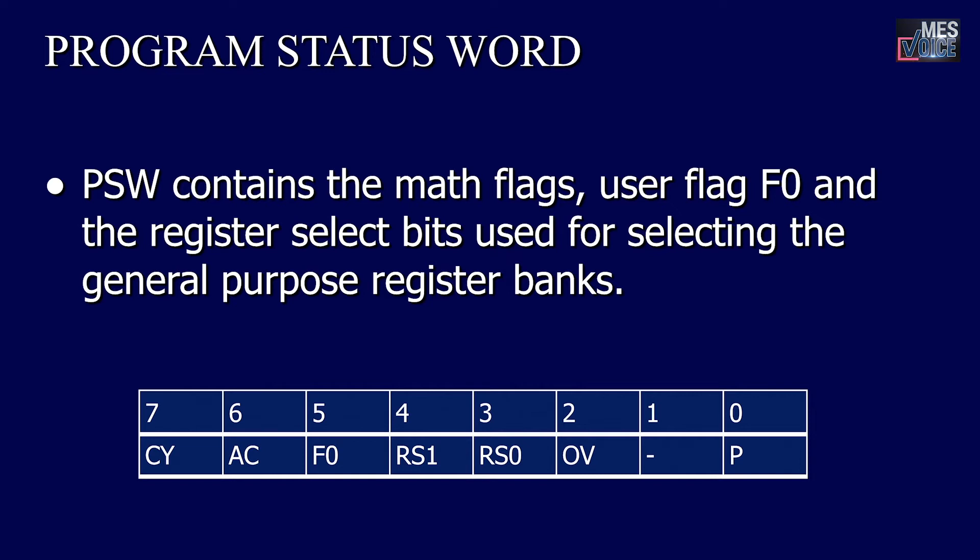The program status word (PSW) contains the math flags, user flag F0, and the register select bits RS0 and RS1 used for selecting the general purpose register banks. The CY flag (carry flag) is set when there is a carry after an arithmetic operation. AC is the auxiliary carry flag, set when there is a carry at D3 bit passed on to D4 in an arithmetic or logical operation. F0 is the user-defined flag. RS1 and RS0 are bank select bits: 00 selects bank 0, 01 selects bank 1, 10 selects bank 2, and 11 selects bank 3. OV is the overflow flag, set when there is an overflow of a result greater than FFH. Bit 1 is reserved for future use, and P is the parity bit, set when there is an even number of parity.